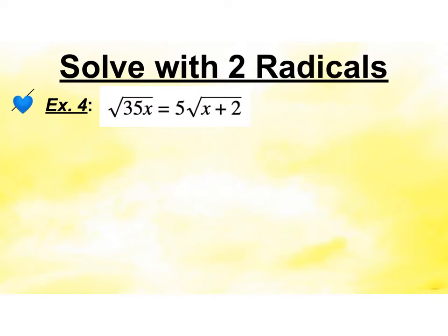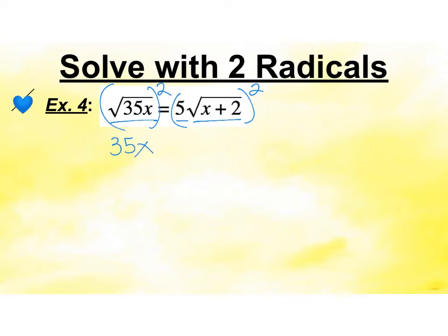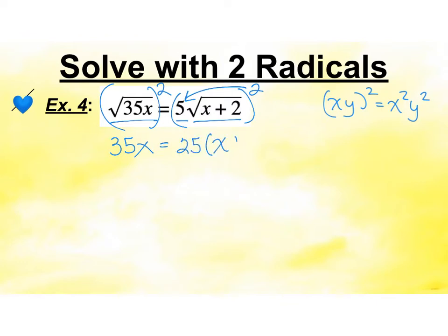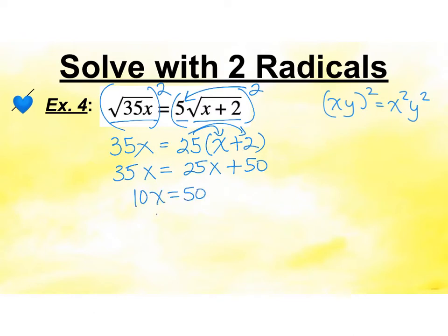We're going to switch to solving with two radicals. Notice these are on opposite sides and there's also a 5. You can square entire sides. When I square the left it undoes it, so I get 35x. Remember when you square a product — if you had x times y whole thing squared, that becomes x squared y squared. Don't forget that 5 must be squared too — that's a common mistake. So we get 25, then distribute to get 35x equals 25x plus 50. Solving for x: subtract 25x to get 10x equals 50, so x equals 5.